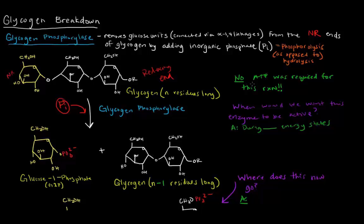So notice that we didn't invest in ATP to get this reaction to go. So this is not a kinase reaction. This is a phosphorylase. We're not getting this phosphate from ATP. We're getting this phosphate just from somewhere in the cell.